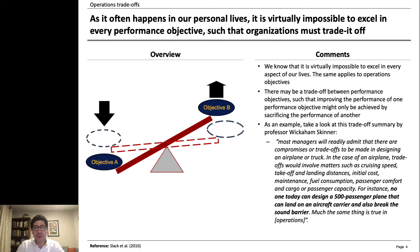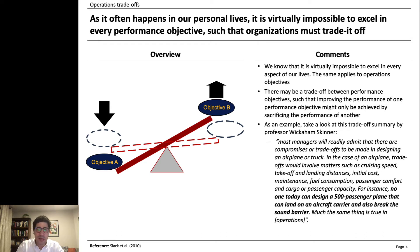As we know, as it happens in our personal lives, it's not possible to excel in every aspect of it. And the same applies to operations objectives. Organizations must trade off performance objectives in order to succeed. They cannot have it all.